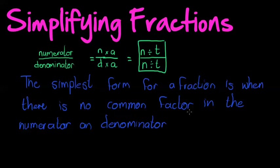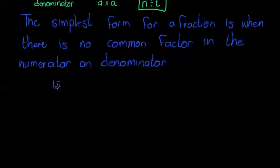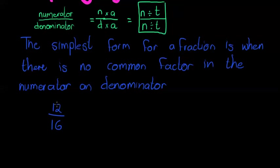So if I have something like, and in the previous video we also looked at 16, 12 over 16. Okay, if I have a factor that can divide into 12 and into 16, it's called a common factor.